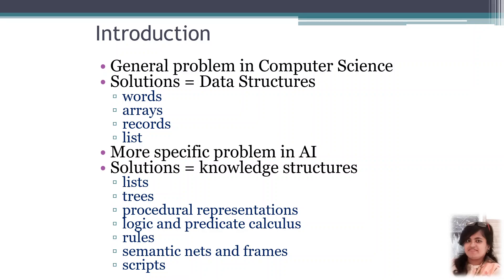But for the artificial intelligence domain, some more specific problems will be given to you. Therefore, knowledge needs to be represented using knowledge structures. Those can be lists, trees, procedural representations, logic and predicate calculus, rules, semantic nets, frames, and clips. Those are different ways of representing knowledge in AI. One particular example we are going to talk about in the next lecture is how to represent knowledge using semantic nets.